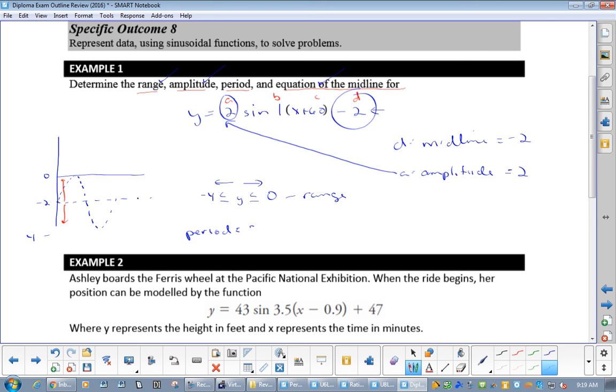The next is our period. Remember that period is 2 pi over b. What is b? b is 1. So our period is 2 pi over 1, which equals 2 pi. So therefore we have solved amplitude, range, period, and equation of midline. So the actual equation of the midline is y equals negative 2.